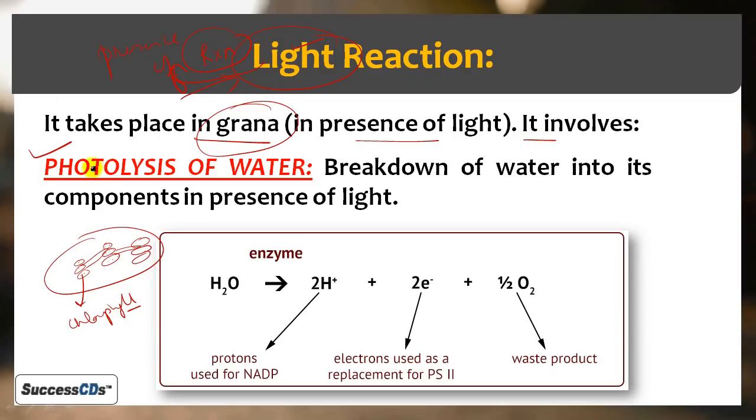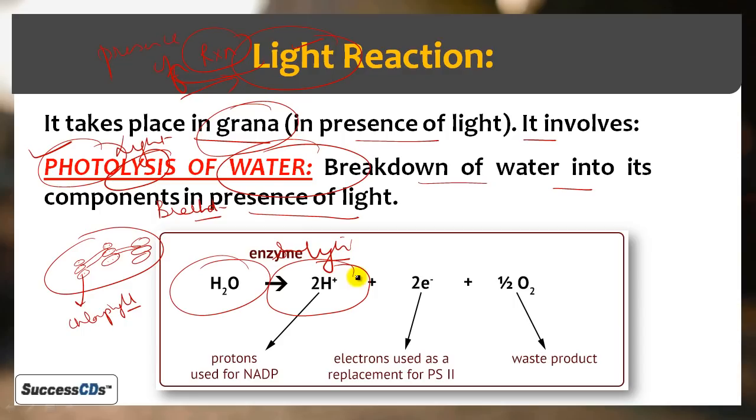The first step of light reaction is photolysis of water. Photo means light, lysis means breakdown. So in presence of light, water breaks down into its components - 2H positive, half O2, and 2 electrons. Water breaks into hydrogen ions, half O2, and 2 electrons to balance the equation.